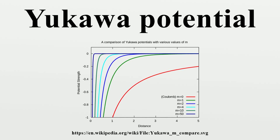In particle and atomic physics, a Yukawa potential is a potential of the form where g is a magnitude scaling constant, i.e., the amplitude of potential.